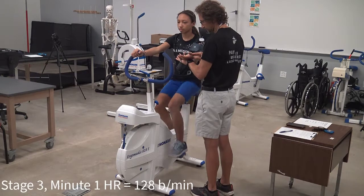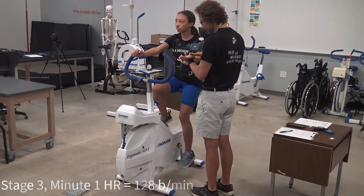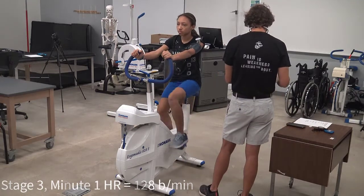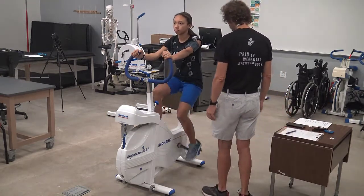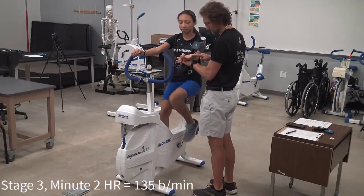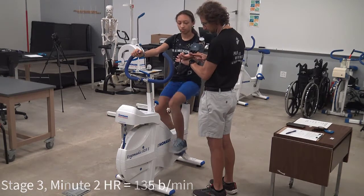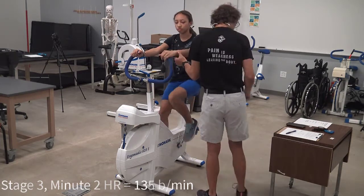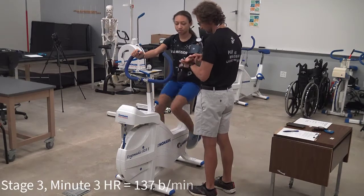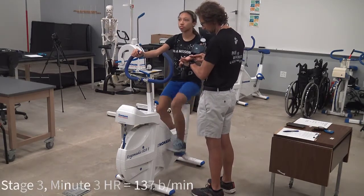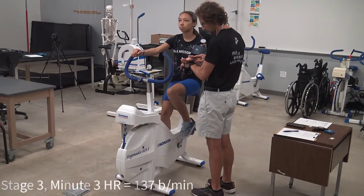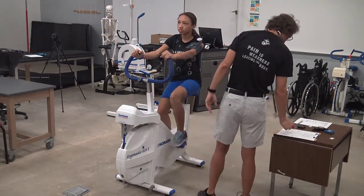We now move forward to the end of minute one in stage three, where our heart rate is 128 beats per minute. And moving forward to minute two of stage three, our heart rate here is 135 beats per minute. And finally, minute three of the third stage rolls around and we take heart rate again. And it's 137 beats per minute, which is only a two beat difference from the minute two heart rate, which is 135 beats per minute. So we know we're in steady state and we do not have to extend this stage to a fourth minute.